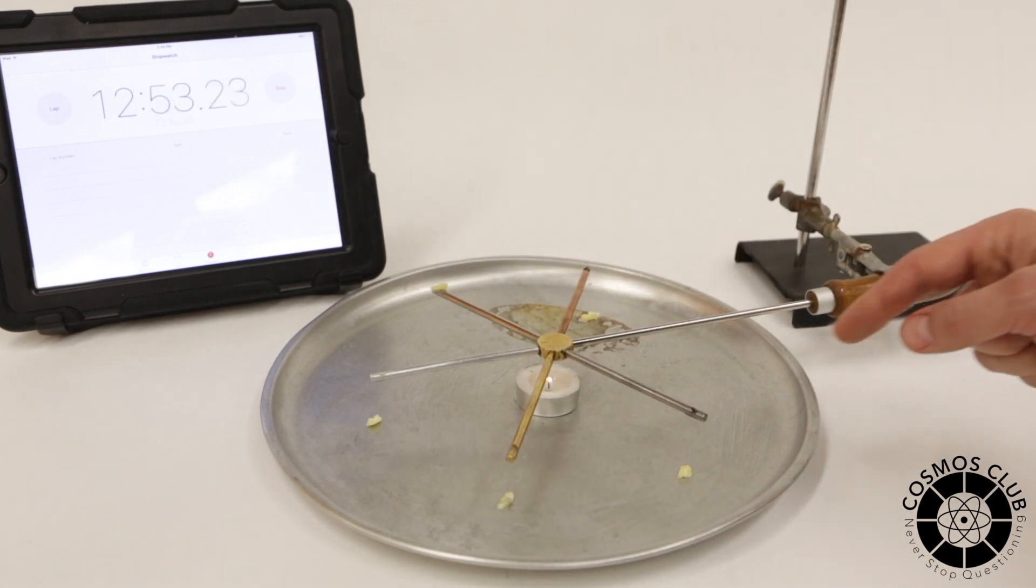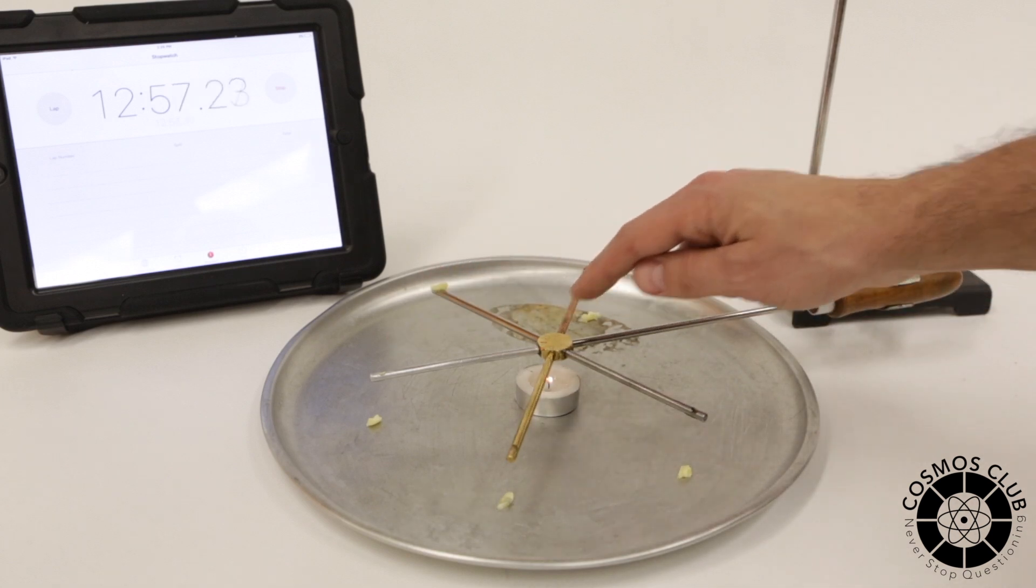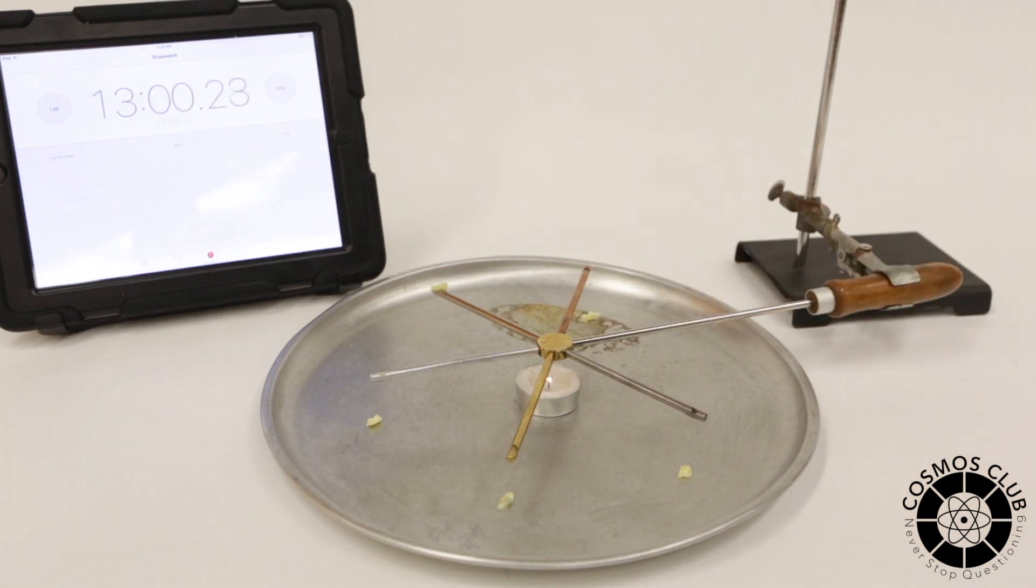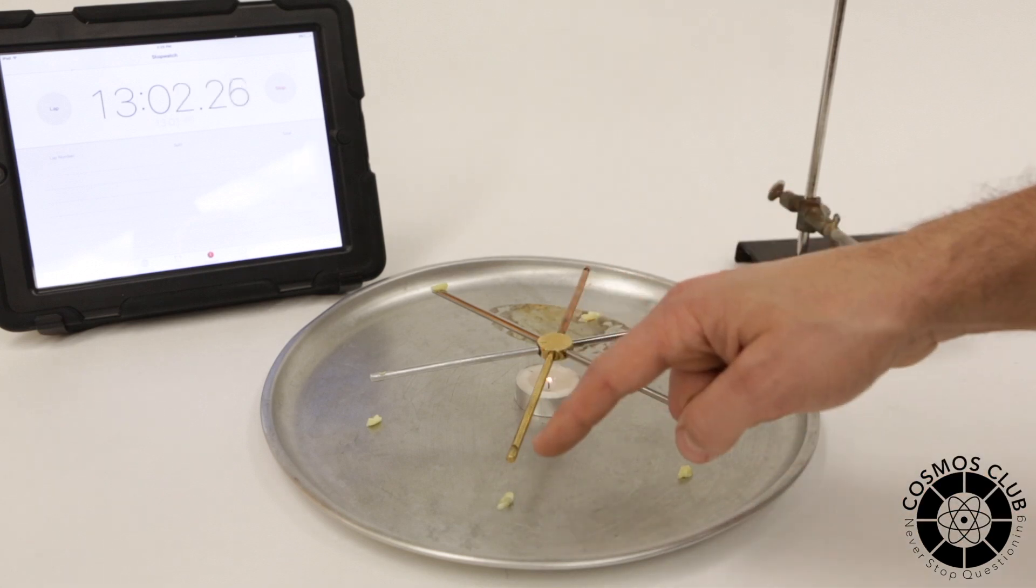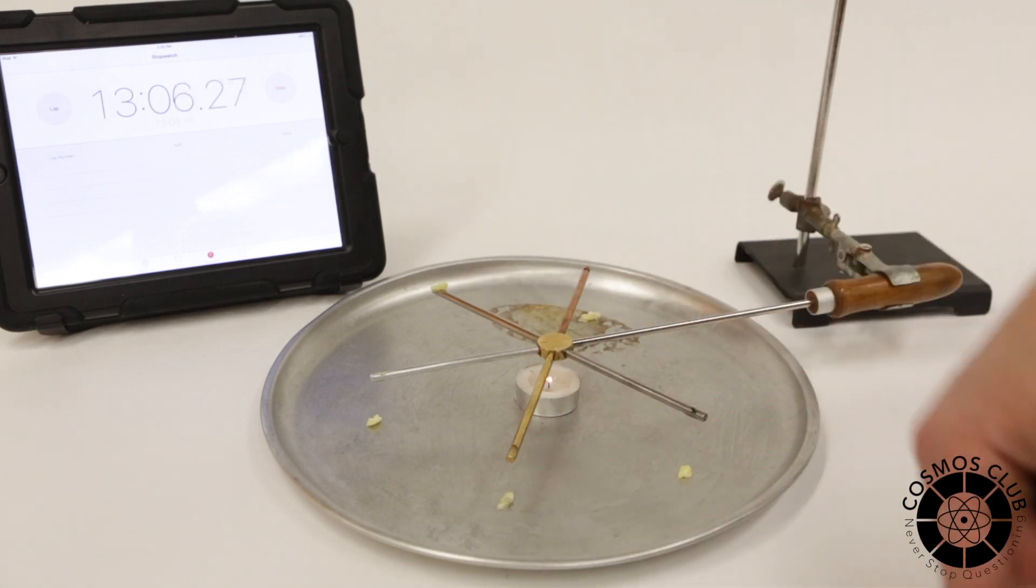You saw right off the bat that aluminum and copper melted within the first minute or so, followed by brass and then silver. So all four of those are very close within the first two minutes.